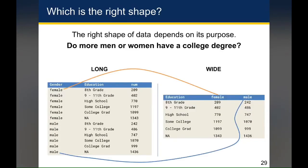I drew some lines to indicate how the long dataset relates to the wide dataset. One way they're connected is that the values of the long dataset actually become column headings in the wide dataset. In this case, I spread the gender variable such that the unique values of gender become the columns in the wide dataset. But I could have just as easily spread the education variable to make multiple columns for each type of education. So if the question is do more men or women have a college degree, my preference is the wide dataset, because I'm able to compare side by side and see that there are more women with college degrees than men.